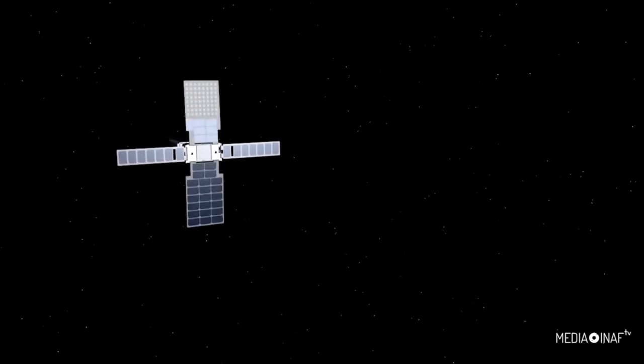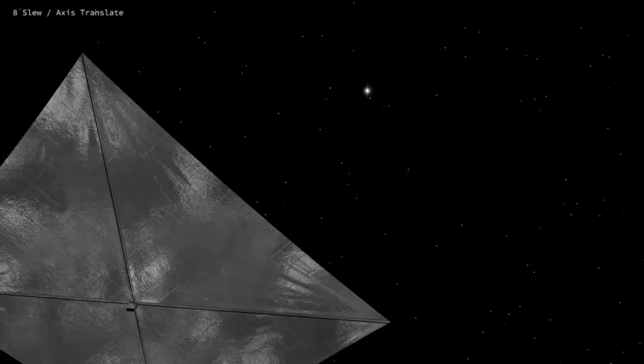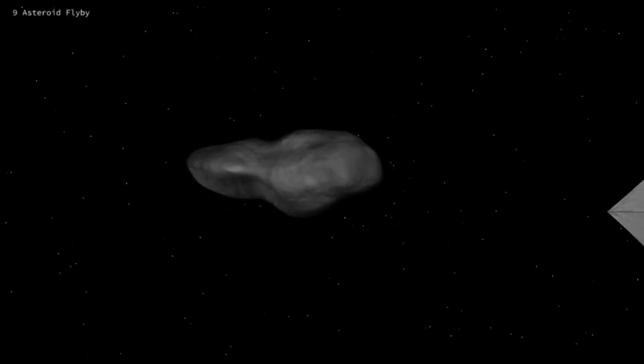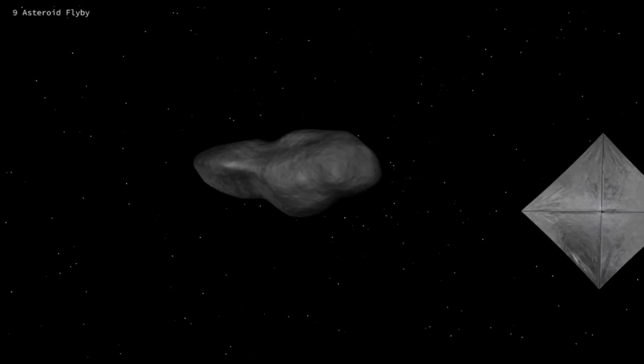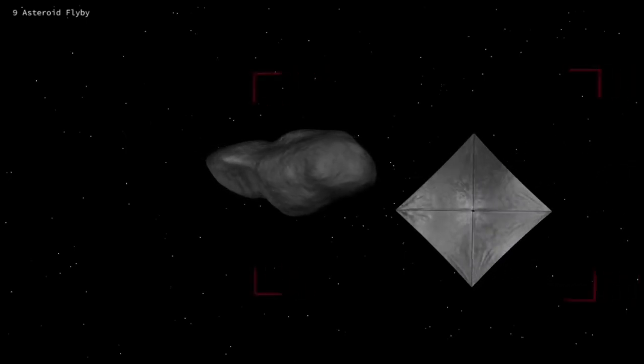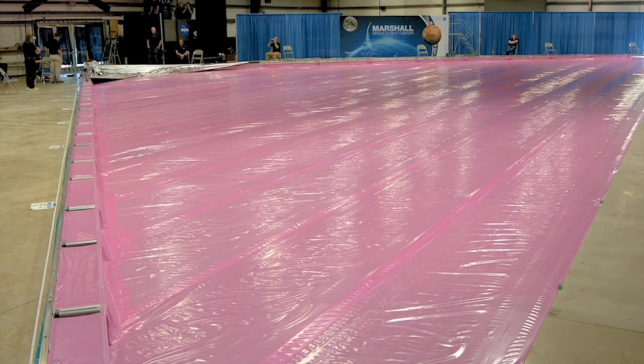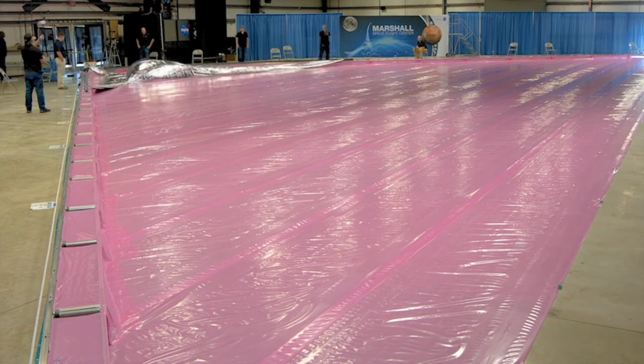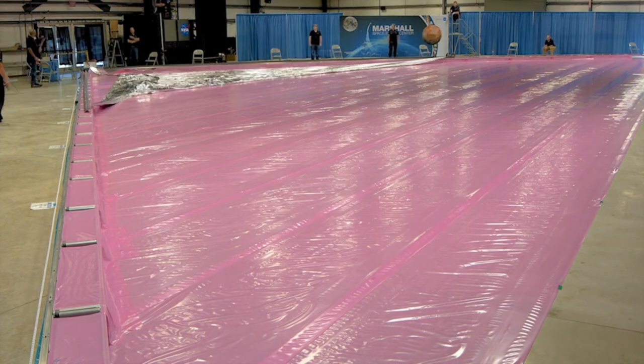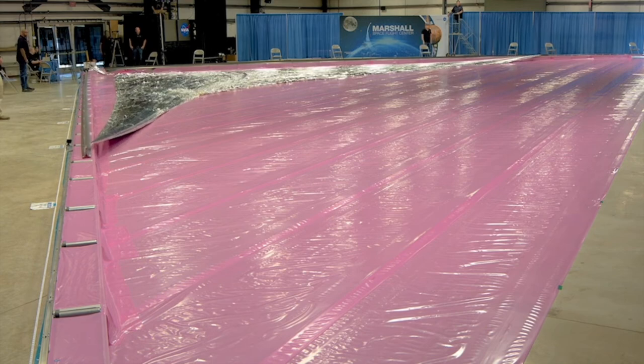Solar sails, also known as light sails or photon sails, present a revolutionary method of spacecraft propulsion that capitalizes on the radiation pressure exerted by sunlight on expansive surfaces. The concept draws an intriguing analogy to sailing boats, where the force of light on a large surface mirrors the action of wind on a sail. This ingenious technology offers the potential for high-speed and extended-duration space travel, all while minimizing costs due to their minimal moving parts and lack of propellant requirements.